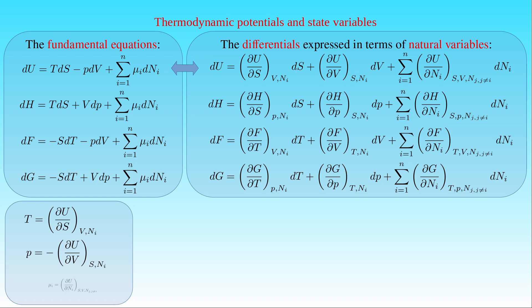The third expression states that the chemical potential μᵢ is equal to the partial derivative of the internal energy U with respect to the number of particles Nᵢ at constant entropy S, the volume V, and the number of particles Nⱼ where j ≠ i.